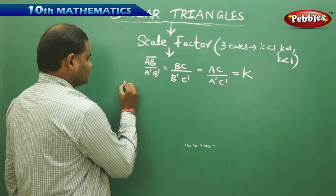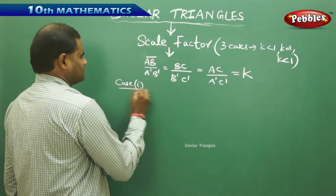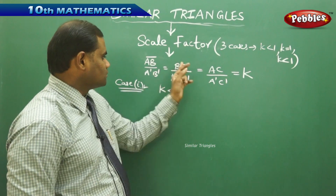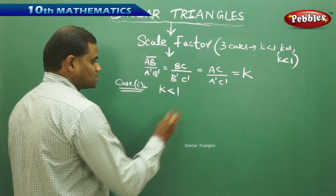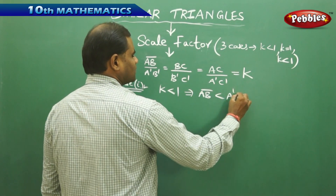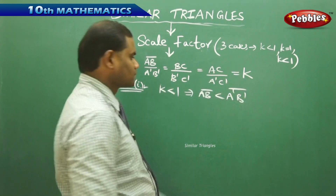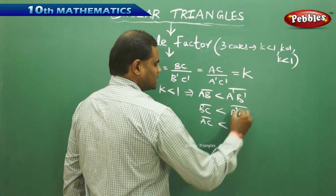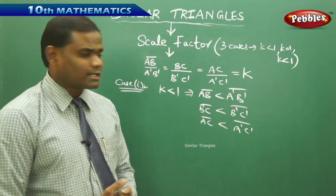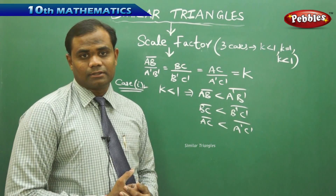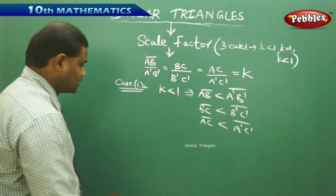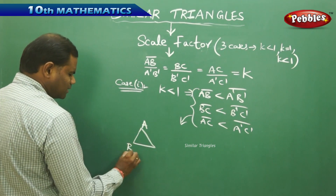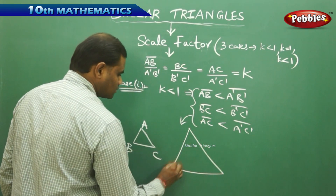Let's take Case 1, which has k less than 1. When the value of k is less than 1, then each side of the first triangle will be less than the corresponding side of the second triangle. So k less than 1 implies AB is less than A'B', BC is less than B'C', and AC is less than A'C'. That means the length of AB is smaller than A'B', so when we convert this into a triangle, the original triangle is smaller than the second triangle.